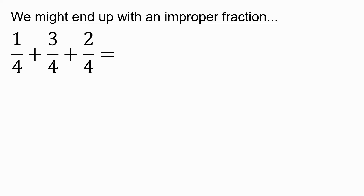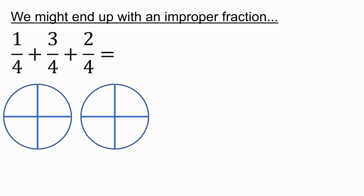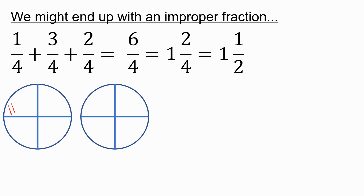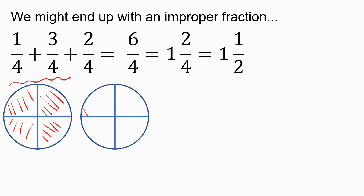Here, we want to add one quarter, three quarters and two quarters. Going on from what we said before, this will give us six quarters. We can visualize it like this: one quarter plus three quarters — I'm shading in what I'm adding. One quarter plus three quarters has given me one whole, but I've still got two more quarters to add.